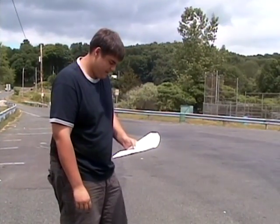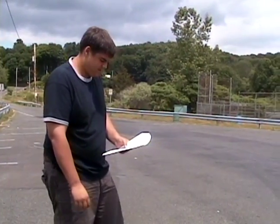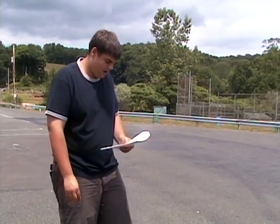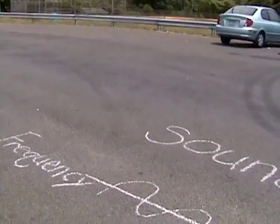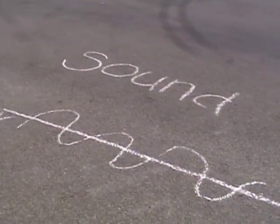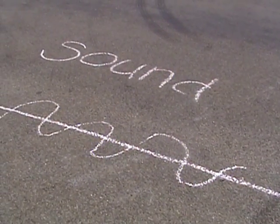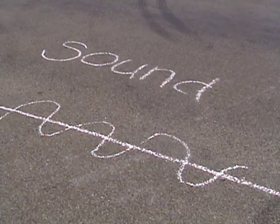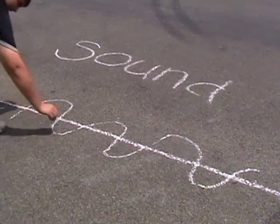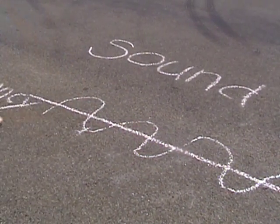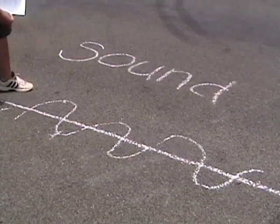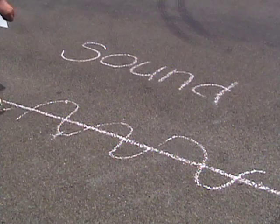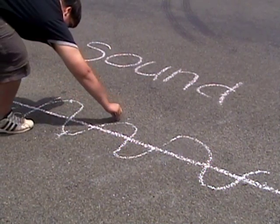There are only three things you need to know about this graph. The lower levels of pressure are called the rarefactions, and the higher levels of pressure are called the compressions. And the distance sound travels is called a wavelength. Rarefactions, compressions, and a wavelength.